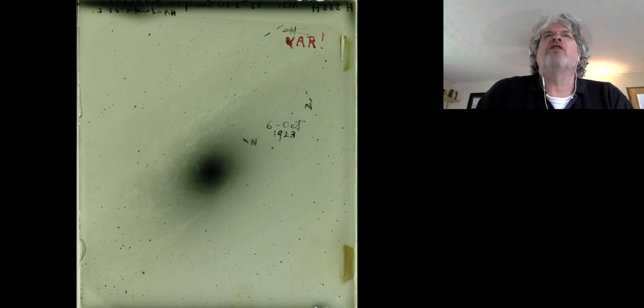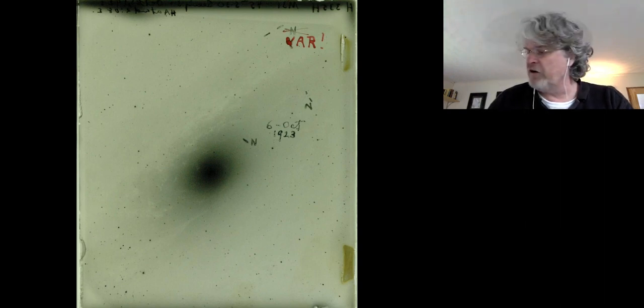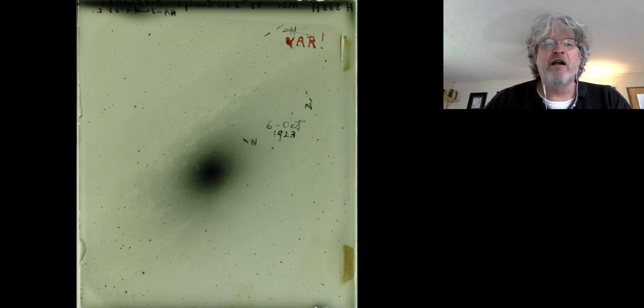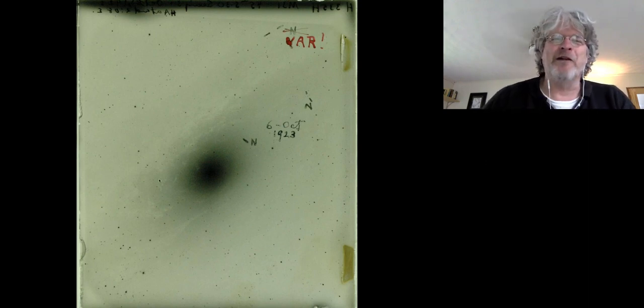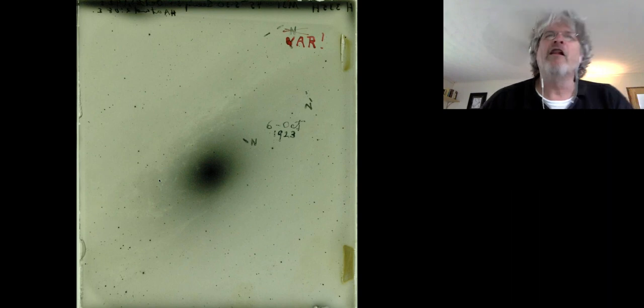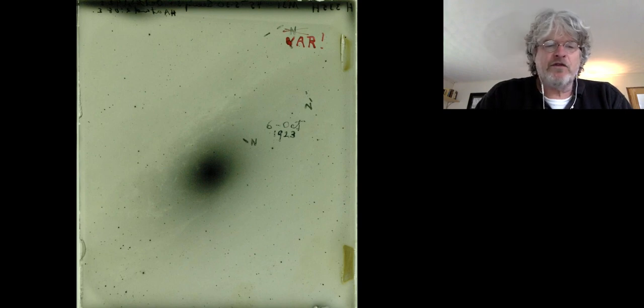What's bright is where no light struck the plate, and where it's dark is where a lot of light struck. You can see stars and this big fuzzball here, which is the great spiral nebula in Andromeda. Hubble was trying to look for novae in M31.